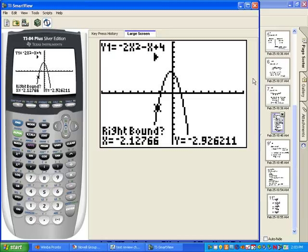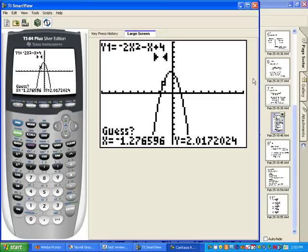Our calculator will say left bound, so we want to go left of where we think the first 0 is. Then hit enter. The calculator will then say right bound, so you will want to take your cursor and go to the right. Hit enter. The calculator now says guess, so you will take your cursor and go where you think it is. You're going to hit enter.